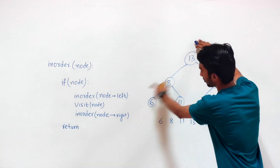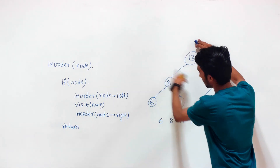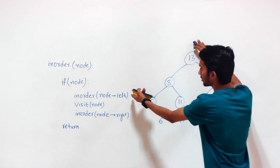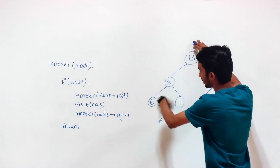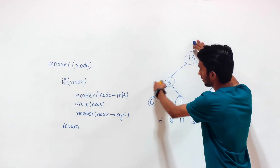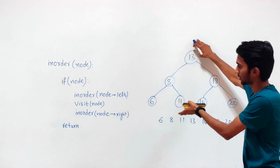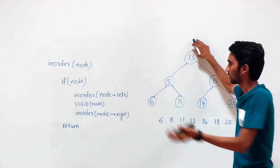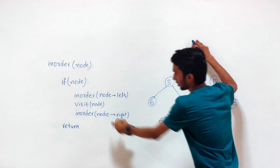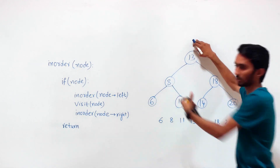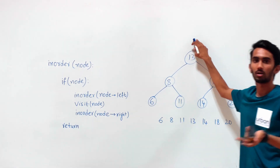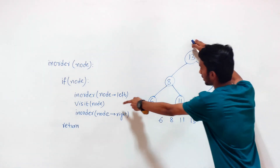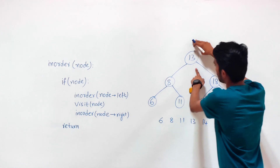When we call the left subtree from the root node, it calls itself recursively. The function calls get pushed down to the call stack, and when the function returns, the function calls get popped out of the call stack. So when we are done with the entire left subtree, we get back to the root node.